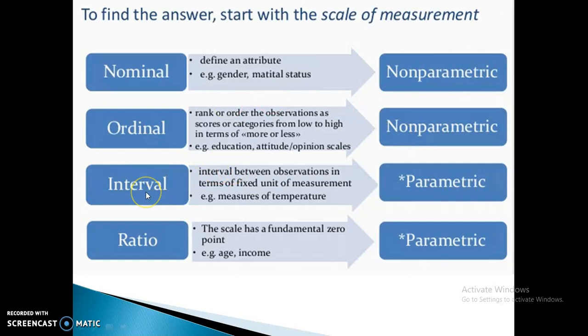Next comes the interval scale of measurement where the interval between observations is in terms of fixed units of measurements, like measures of temperature varying from 0 to 5 degrees Celsius or 6 to 10, 11 to 15. So we are talking in terms of intervals, so here we will call it parametric. We will take this data for parametric test.